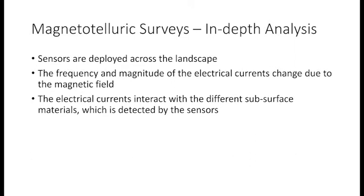More recently, MT surveys have become more effective at creating images of deeper structures, because they take advantage of the Earth's magnetic fields and the variation that comes throughout the day. These variations create electrical currents that change due to the magnetic field. You measure how the rock interacts with these different changes in electrical currents using sensors deployed across the landscape. This gives you a very accurate reconstruction of the geology in the area, since the frequency and magnitude of the detected currents can determine the different types of rocks present.